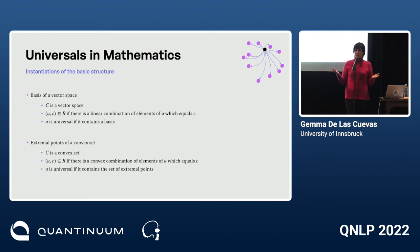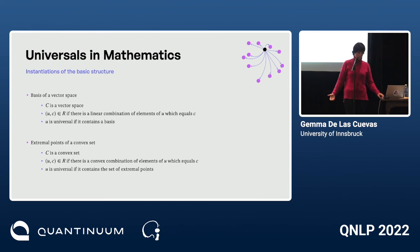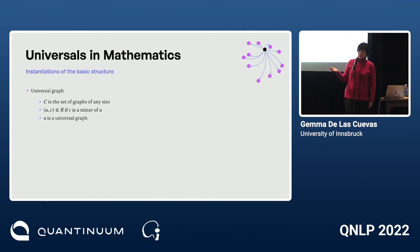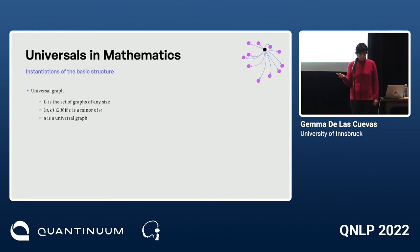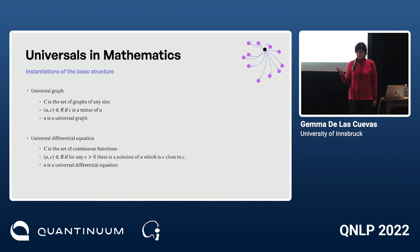Similarly for the extremal points of a convex set or the extremal rays of a convex cone, where R is convex or positive combination and U is universal if it contains all extremal points or rays. There's also the universal graph in mathematics, literally instantiating our basic structure for a minor or subgraph relation, and the universal differential equation, whose set of solutions is dense in the set of continuous functions.